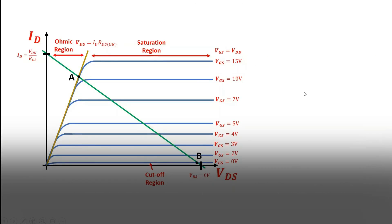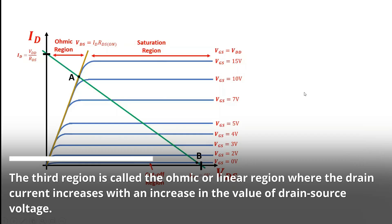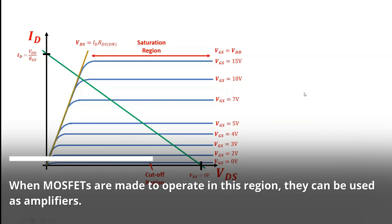The third region is called the ohmic or linear region, where the drain current increases with an increase in the value of drain source voltage. When MOSFETs are made to operate in this region, they can be used as amplifiers.